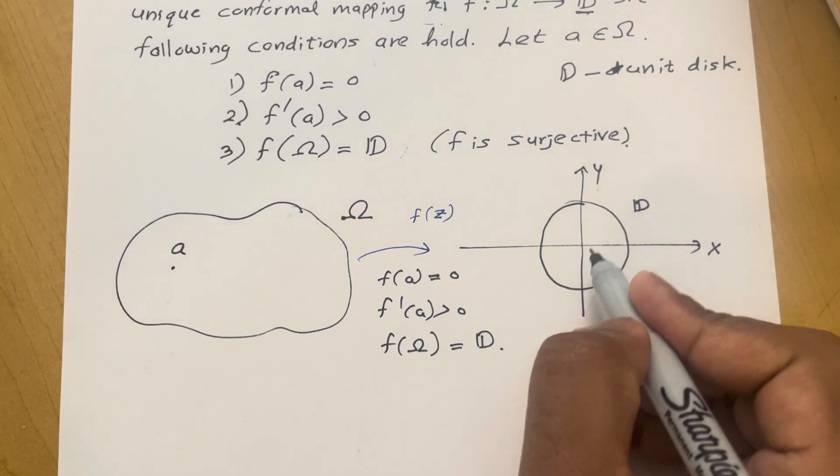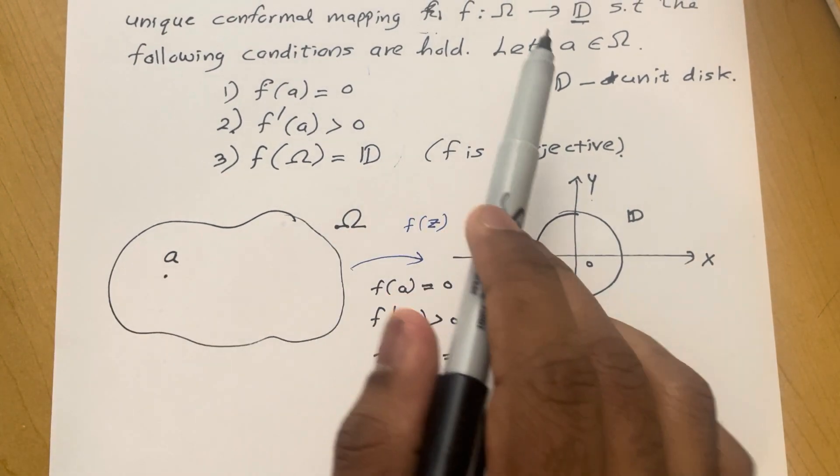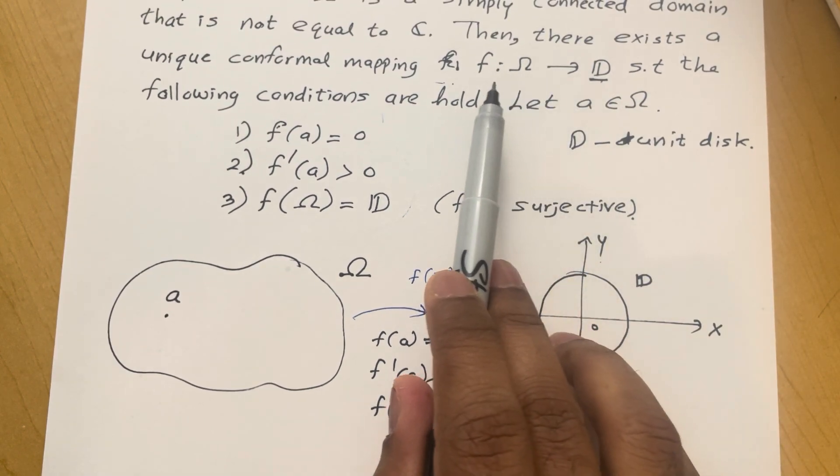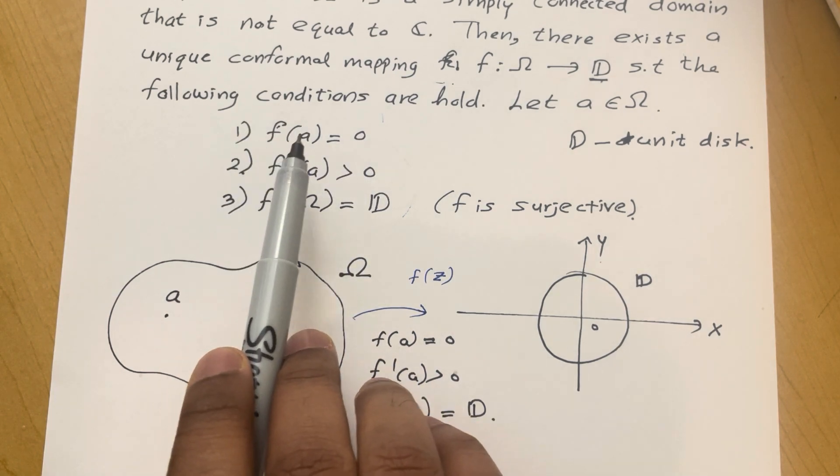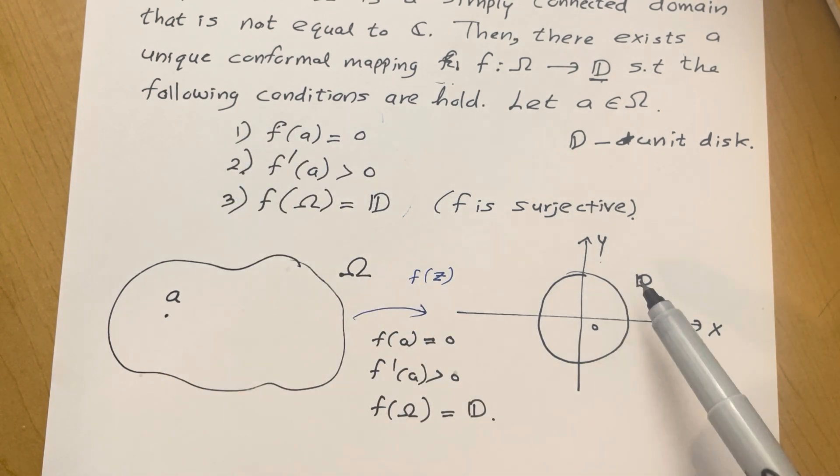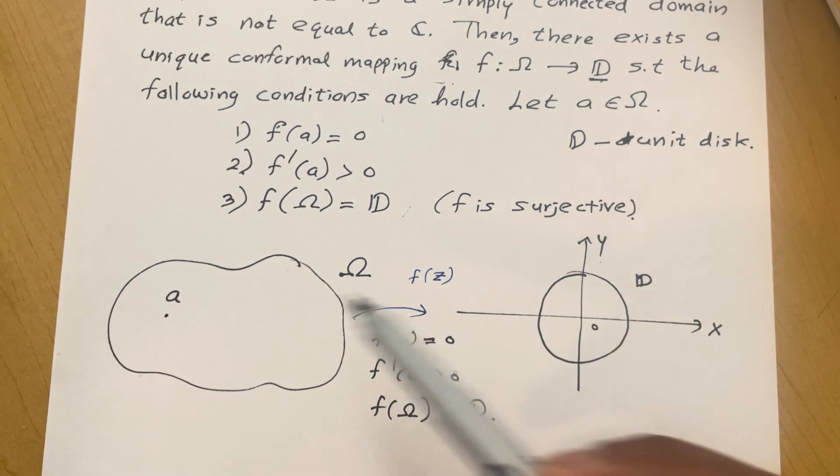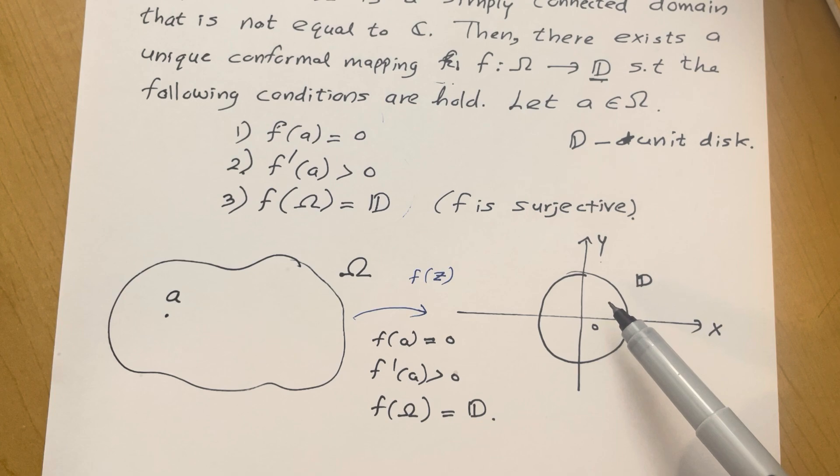And another thing that you have to note is the Riemann mapping theorem guarantees only the existence and uniqueness of the conformal bijection from the domain Ω to the unit disk. It does not say anything about how to find a conformal map from a given domain to the unit disk.